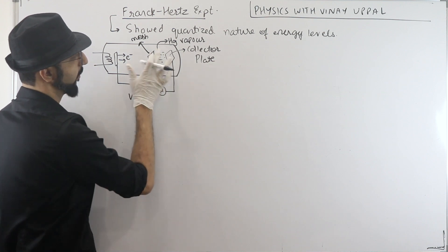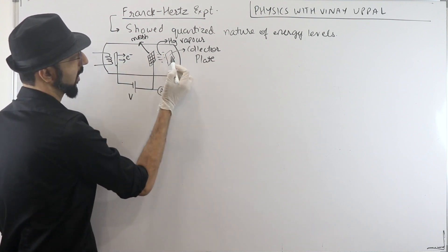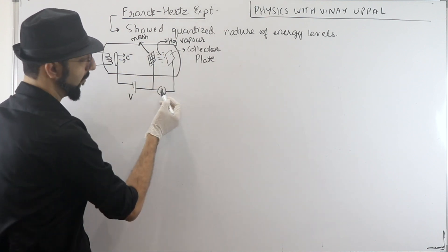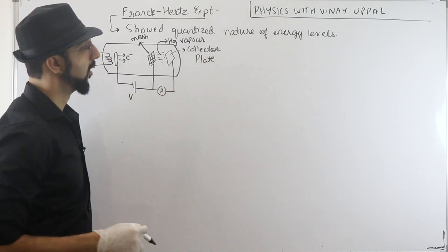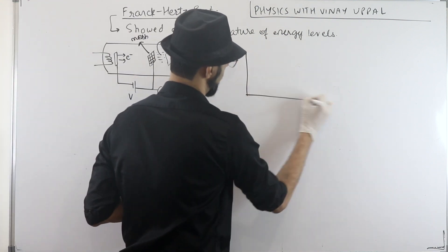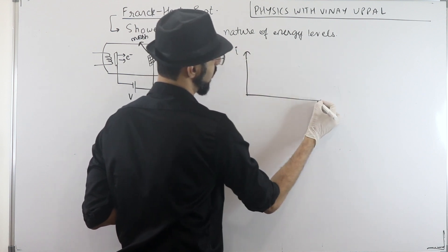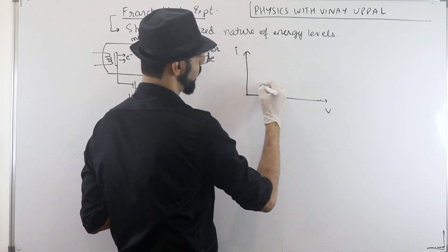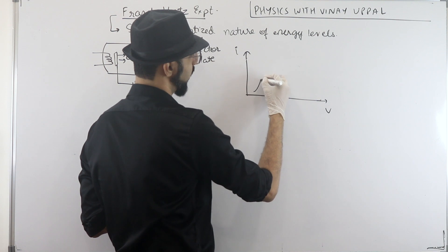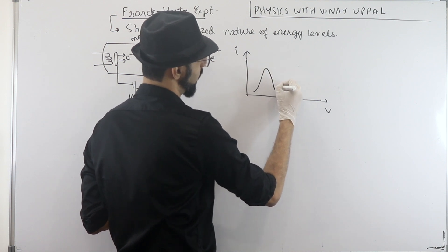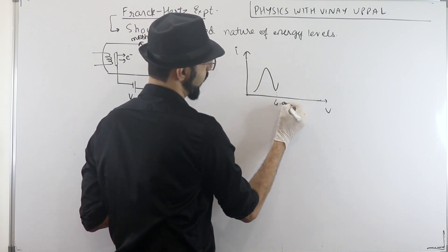And this is a collector plate with which an ammeter is connected so we can measure the current. So what happened was when they measured the current versus the voltage, the current rose but suddenly current dropped at 4.9 volts.